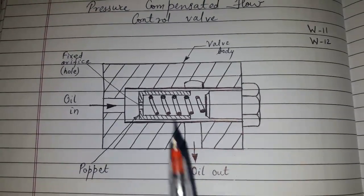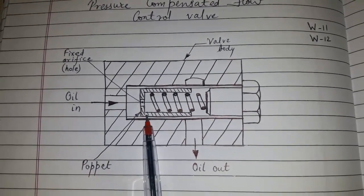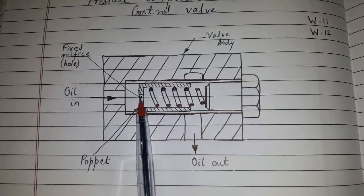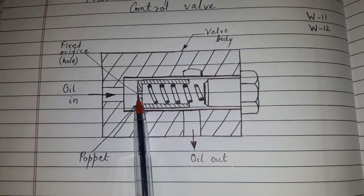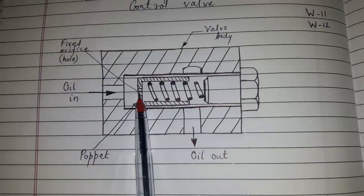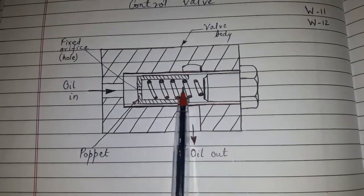The construction: It consists of a hollow cylinder-shaped poppet at the end of which there is a fixed orifice or hole. There is a spring inside the poppet.